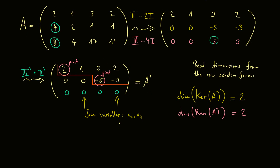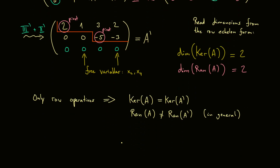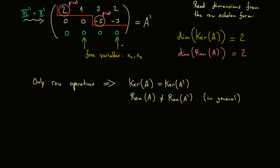Keep in mind what we did to A to reach A': we only applied row operations. The good thing about row operations is that we don't change the kernel. That is why when we solve a system of linear equations, we do row operations — the whole thing gets easier, but still has the same solution set and the same kernel. However, you might fear this does not hold for the range — and you are correct. In general, you will change the range by doing row operations. I have other videos that explain the kernel calculation in detail, so maybe check those out.